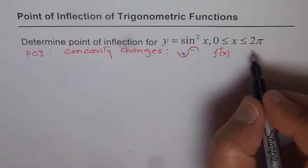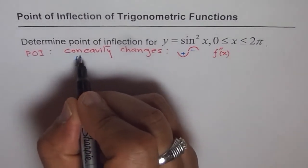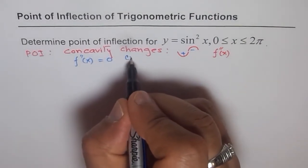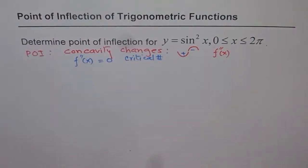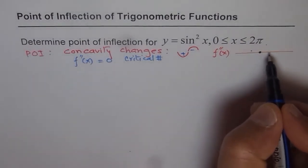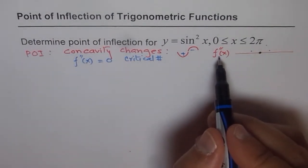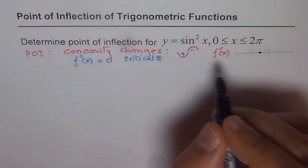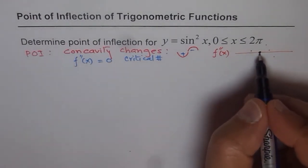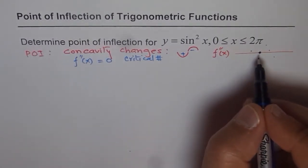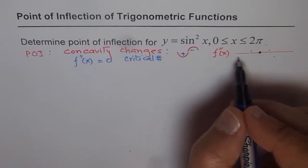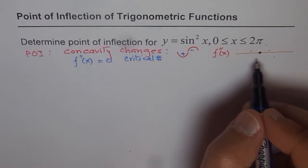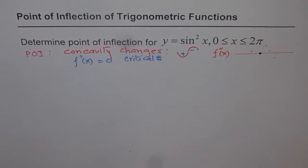The first condition is that the second derivative f''(x) should be equal to zero — that gives us a critical number. Then we test around the critical number by taking a point on the left side and on the right side and plugging those values into the second derivative. If the value is positive, it is concave up; if negative, it is concave down. Since the concavity changes at this zero of the second derivative, we say a point of inflection exists. But if there is no change in concavity, then a point of inflection will not exist.